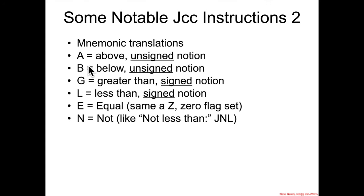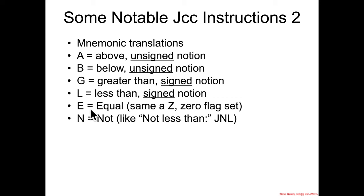Within those conditional codes, here is the translation of the mnemonics. If it's something like JA — jump above — then 'above' is an unsigned notion. So if you have 0xFFFF and you're comparing it to zero, 0xFFFF is above zero because it's unsigned. Whereas in a signed interpretation 0xFFFF would be a negative value and thus not greater than zero. Above and below are the unsigned notions; greater than and less than are the signed notions. E is equal — and some disassemblers use Z instead of E, so know those translate between each other. N is not.